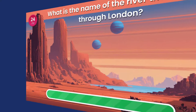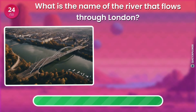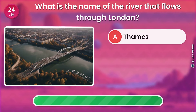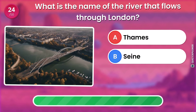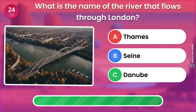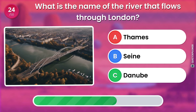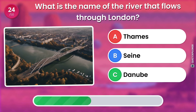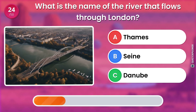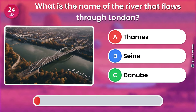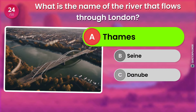What is the name of the river that flows through London? Thames. Seine. Danube. The answer is: Thames.